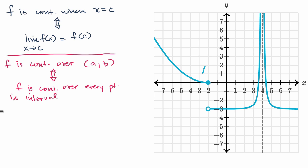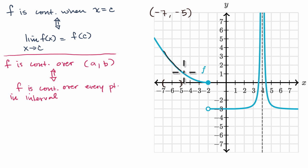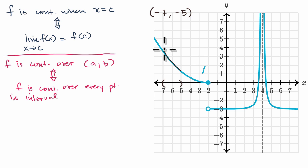Let's do a couple of examples. Let's say we're talking about the open interval from negative seven to negative five. Is f continuous over that interval? There's a not-so-mathematically-rigorous way where you could say: if I start here, I can get all the way to negative five without having to pick up my pencil. If you wanted to do it more rigorously and had the definition of the function, you might prove that for any point in the interval, the limit as x approaches that point of f of x is equal to the value of the function at that point. When you only have a graph, you can do it by inspection and say I can go from that point to that point without picking up my pencil.